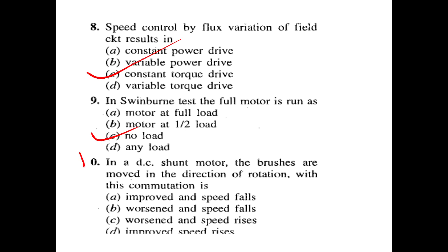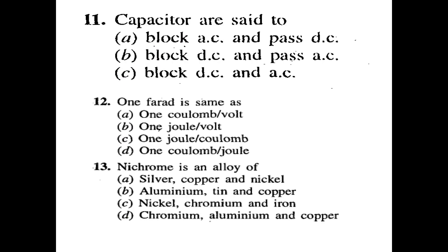Eighth question: In a DC shunt motor, the brushes are shifted more in the direction of rotation. With commutation, the speed is improved and rises. Next question: Capacitors are said to block DC and pass AC.